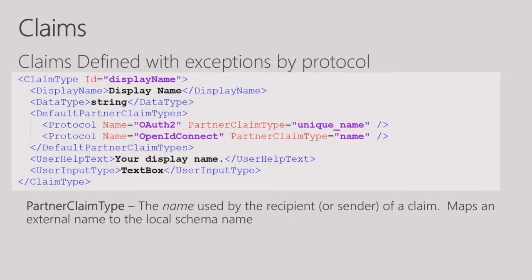There can be a claim that comes from an identity provider like Facebook, and then there are claims the user is asserting — like asserting their first name or display name. So the string 'display name' will show up on any page the user sees in their user journey.